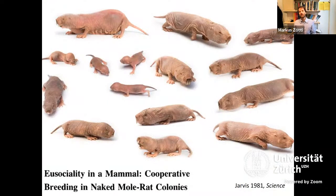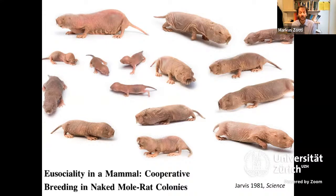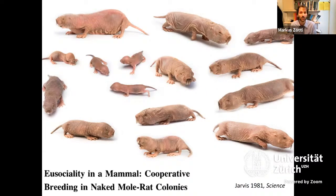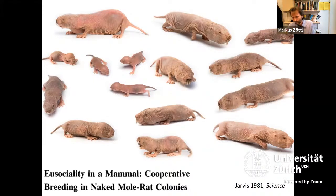Naked mole rats are a special case and have often been called eusocial mammals. They are cooperative breeders and it's been suggested they share characteristics with eusocial insects. In mole rat groups — which can be very large, sometimes 200 to 300 individuals, with an average around 60 — there is always only one breeding female and mostly only one breeding male, though sometimes other males may reproduce too.